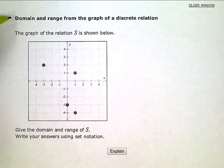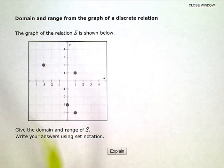Domain and range from the graph of a discrete relation. The graph of the relation S is shown below. Give the domain and range of S. Write your answers using set notation.